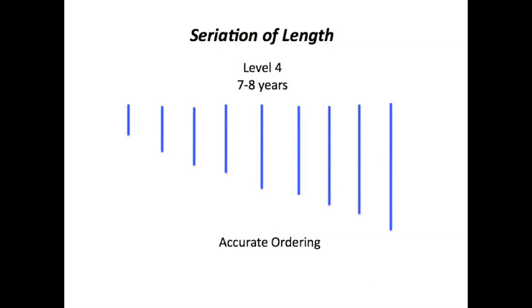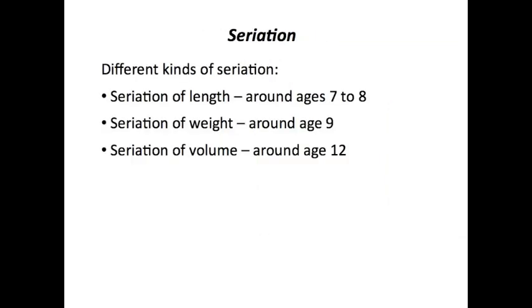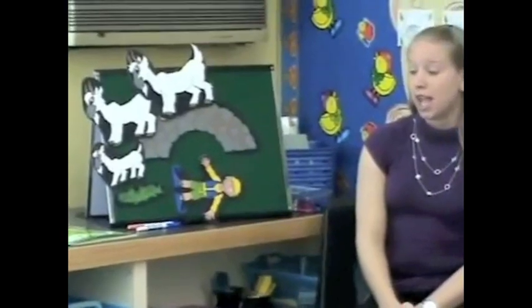Children move through seriation of length according to their age. Keep in mind we have seriation of things like length, weight, and volume, just for example. The following video is very enjoyable as you watch a group of kids do a little seriation of the three billy goats. If someone is going to be your partner, the builder, the drawer — I want you to build and draw the three billy goats in size order.